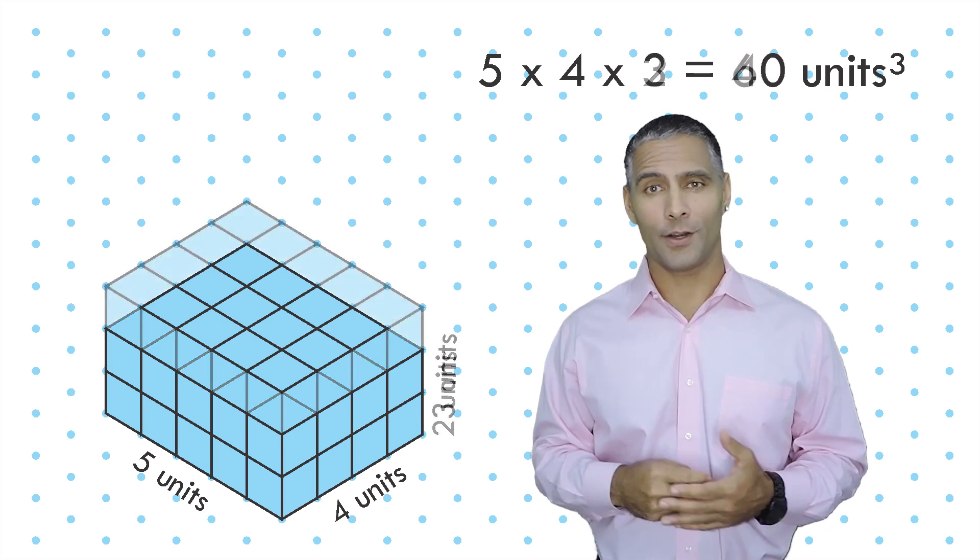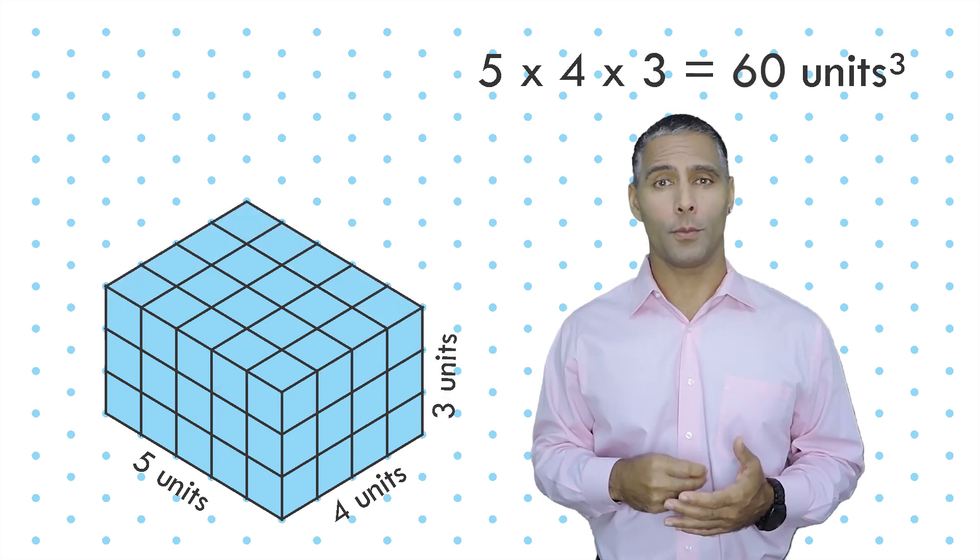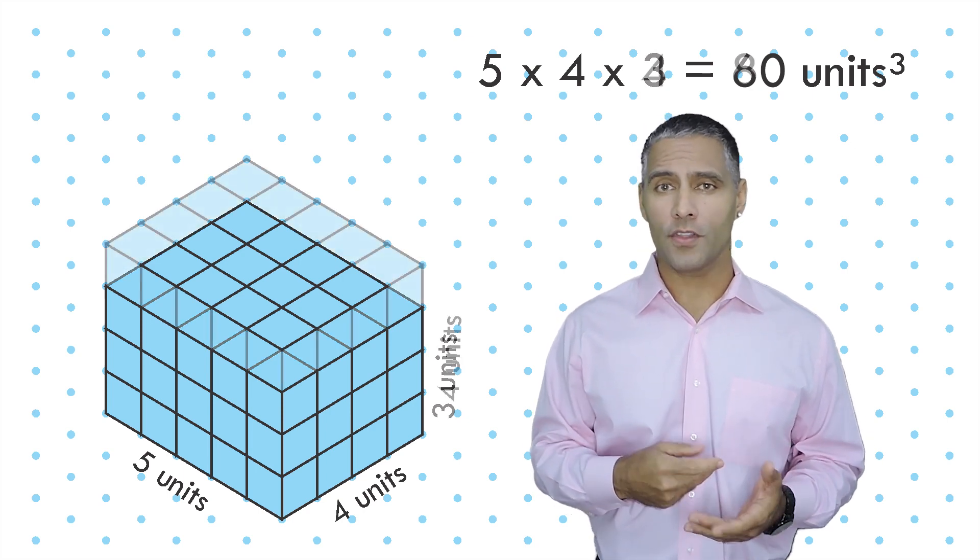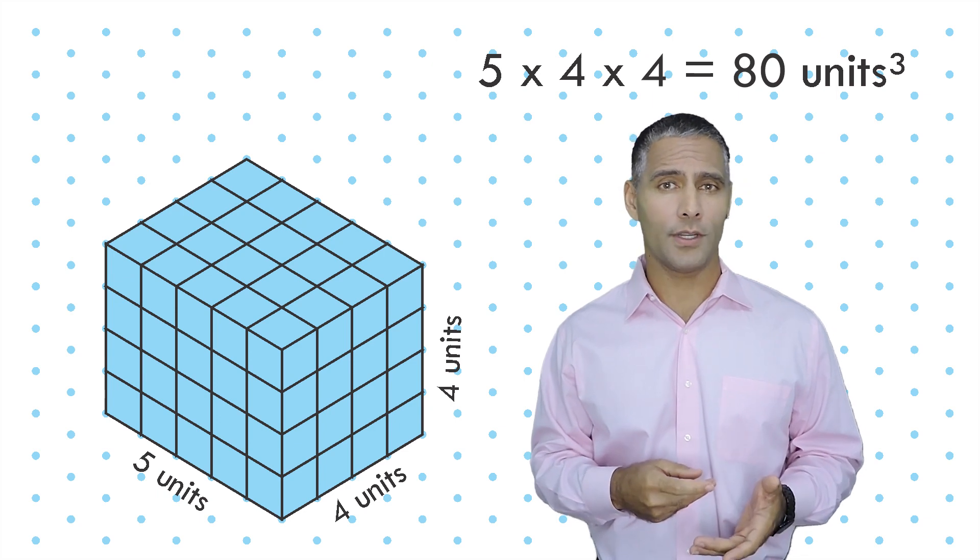If we add a third layer, this creates a five by four by three configuration, which gives us a volume of sixty cubic units. And a fourth layer creates a volume of eighty cubic units.